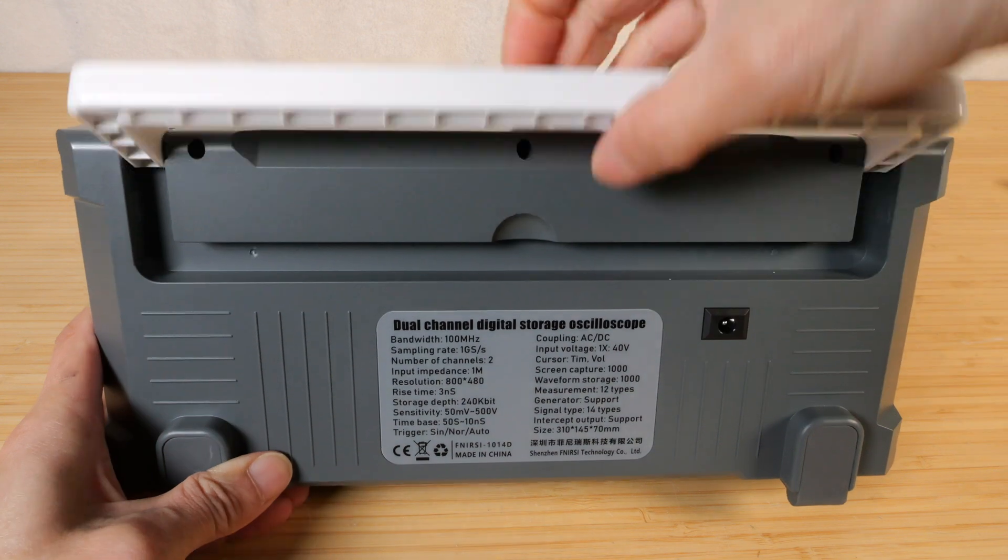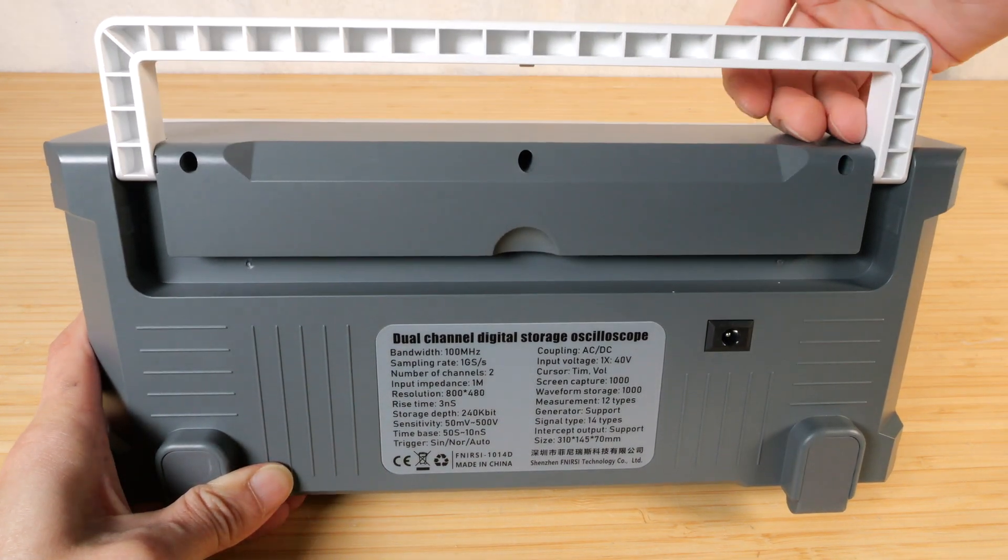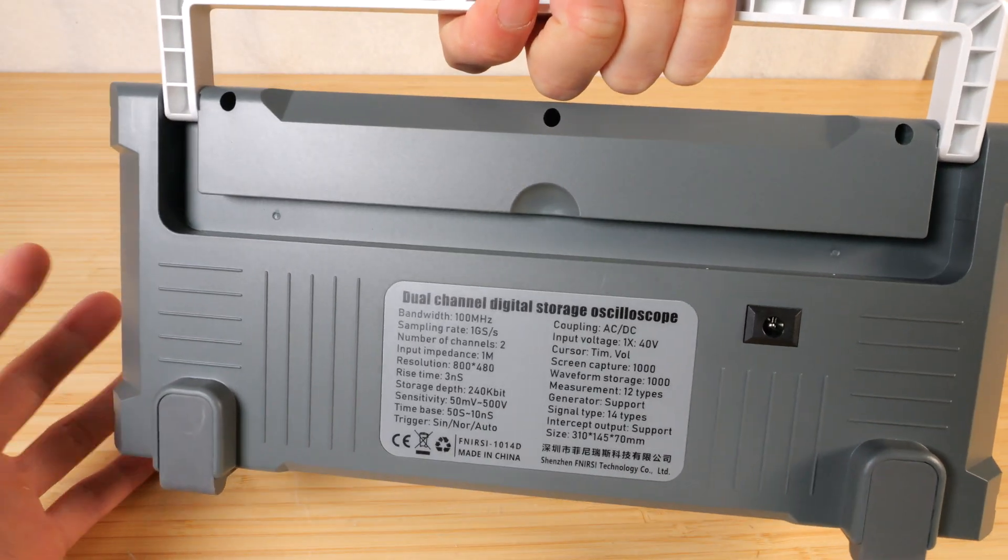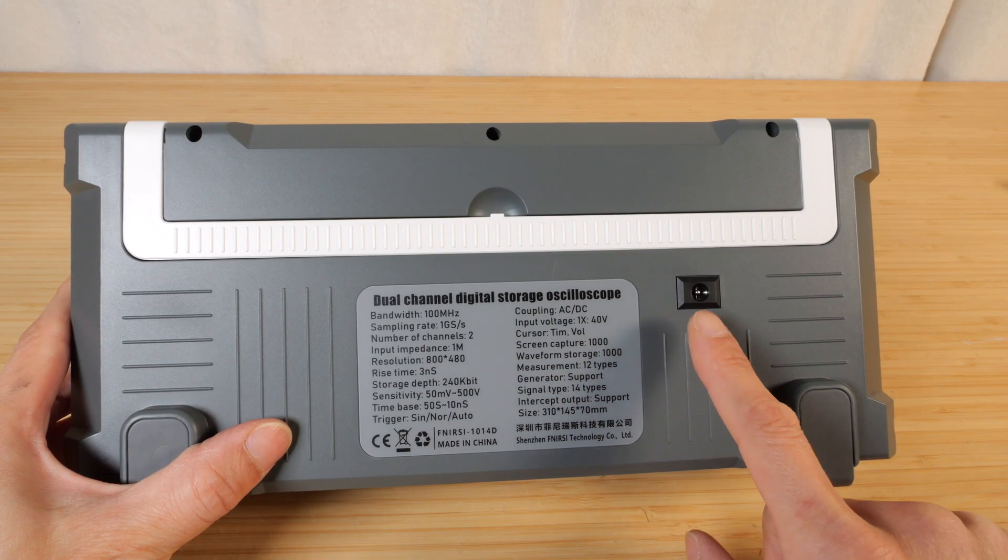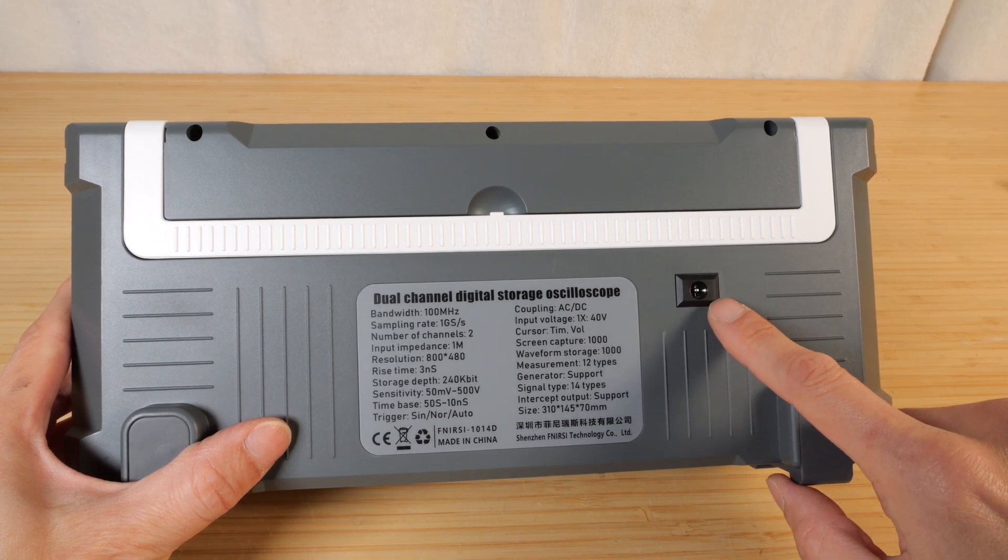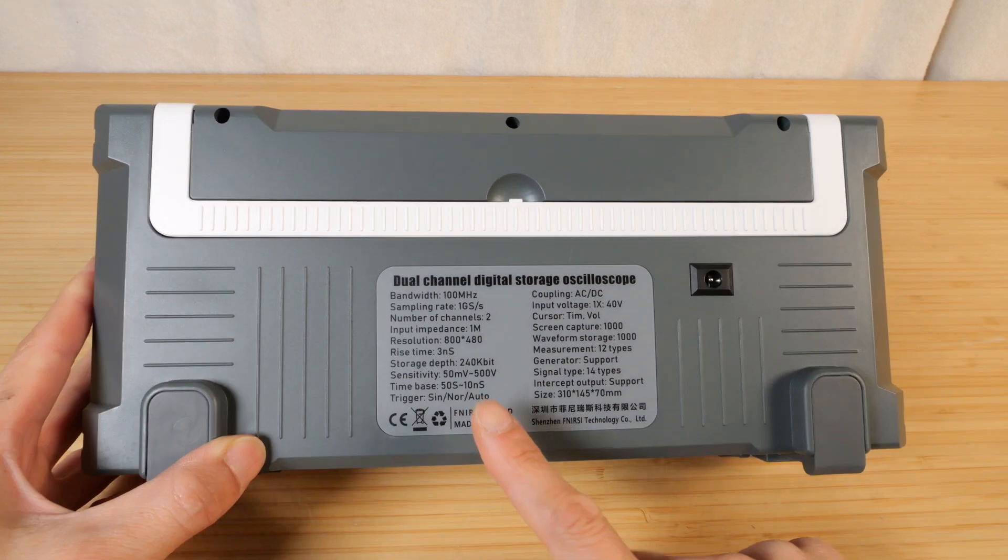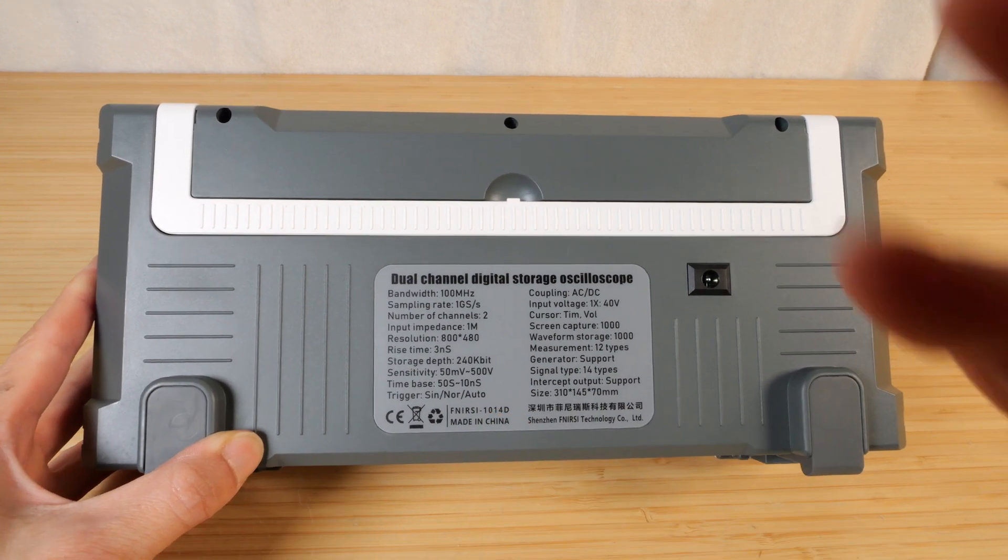On the back, there's a hidden handle that runs almost the entire length of the scope. This is pretty typical, so you can carry it around. Nothing hidden inside this groove here. Usually, the sticker will say what kind of voltage and polarity this DC connector requires, but it's not written on this particular sticker.